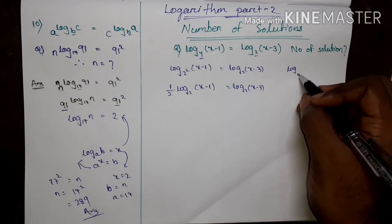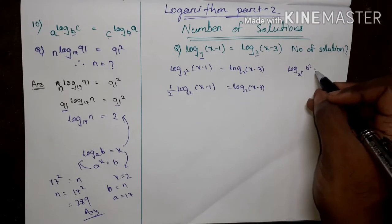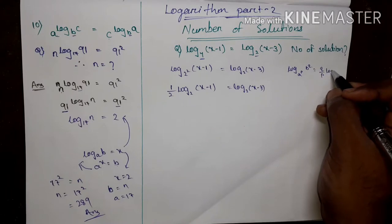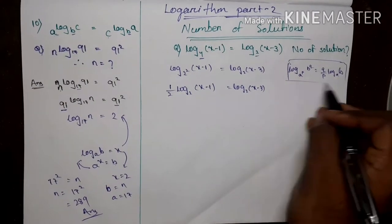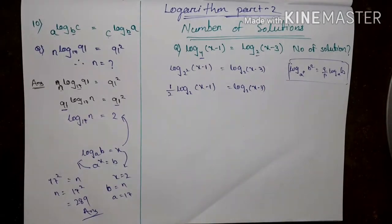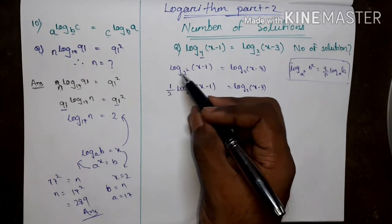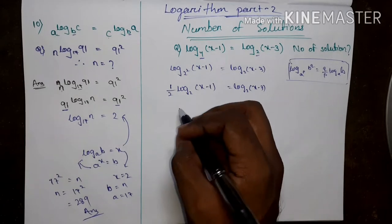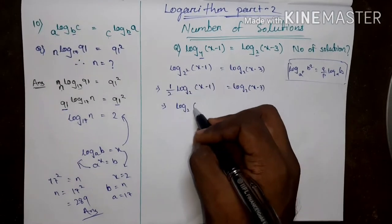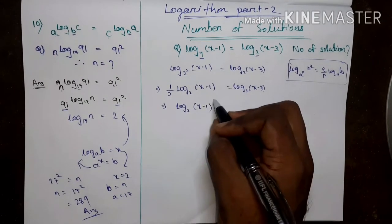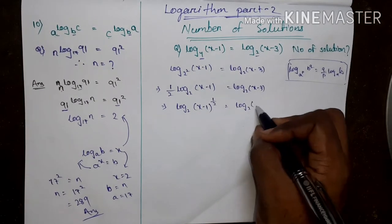Using the rule: log_(A^P)(B^Q) equals (Q/P) log_A B, I can return this. So if (1/2) is in front, it goes as the power: log_2(x-1)^(1/2) equals log_2(x-3).